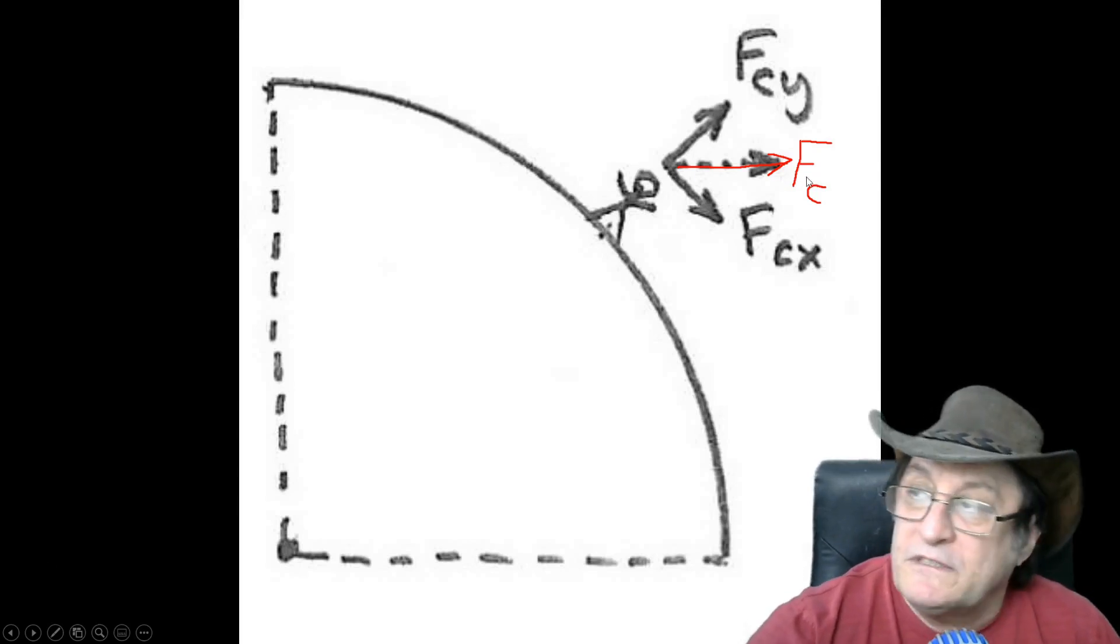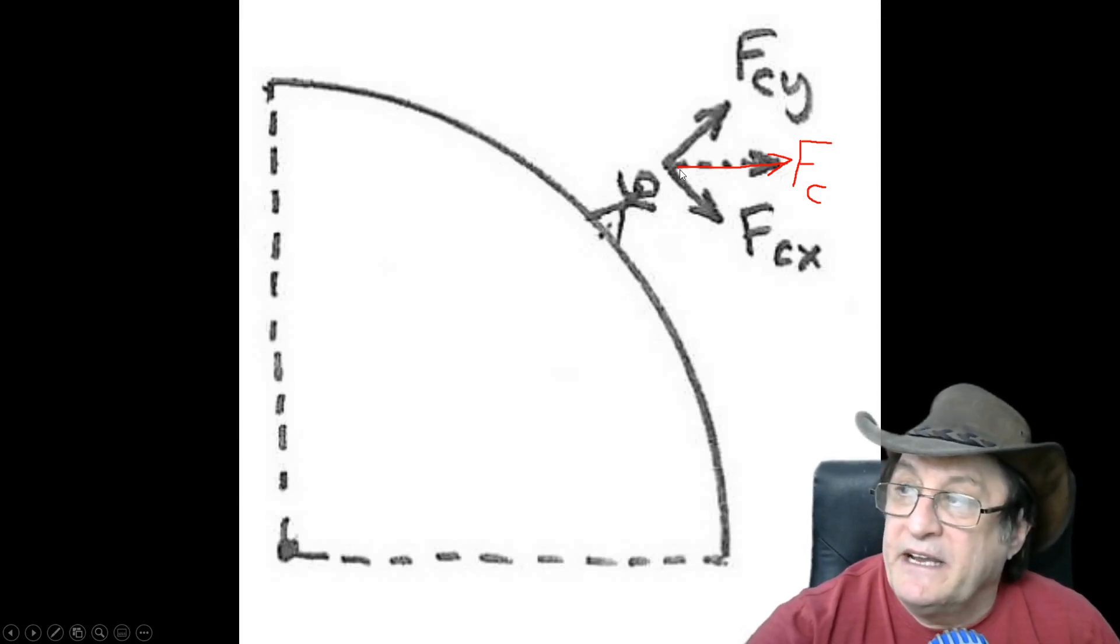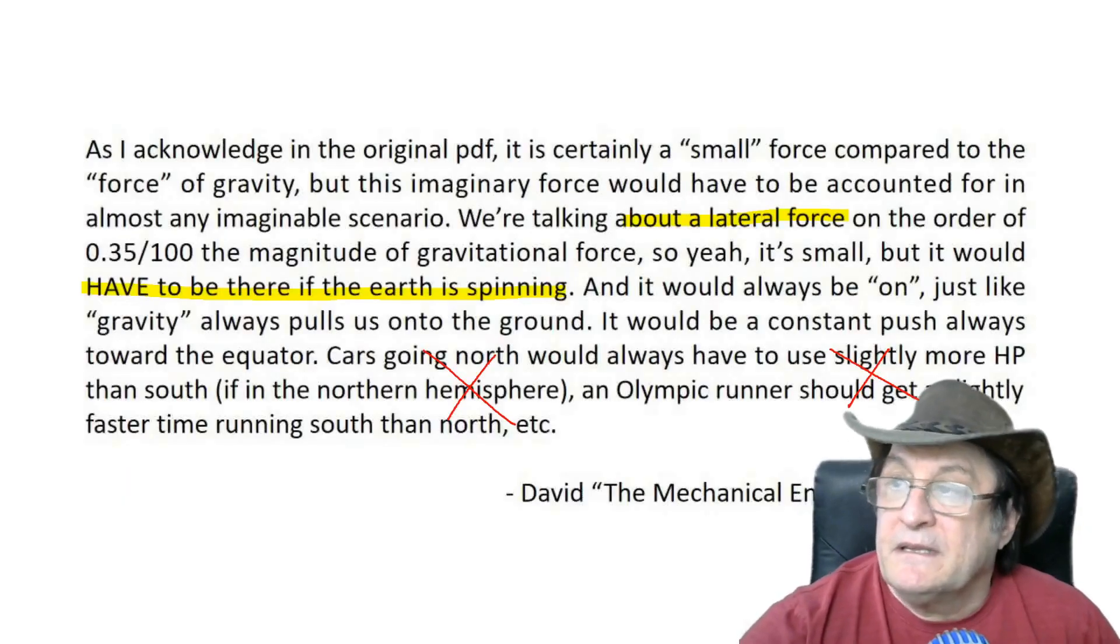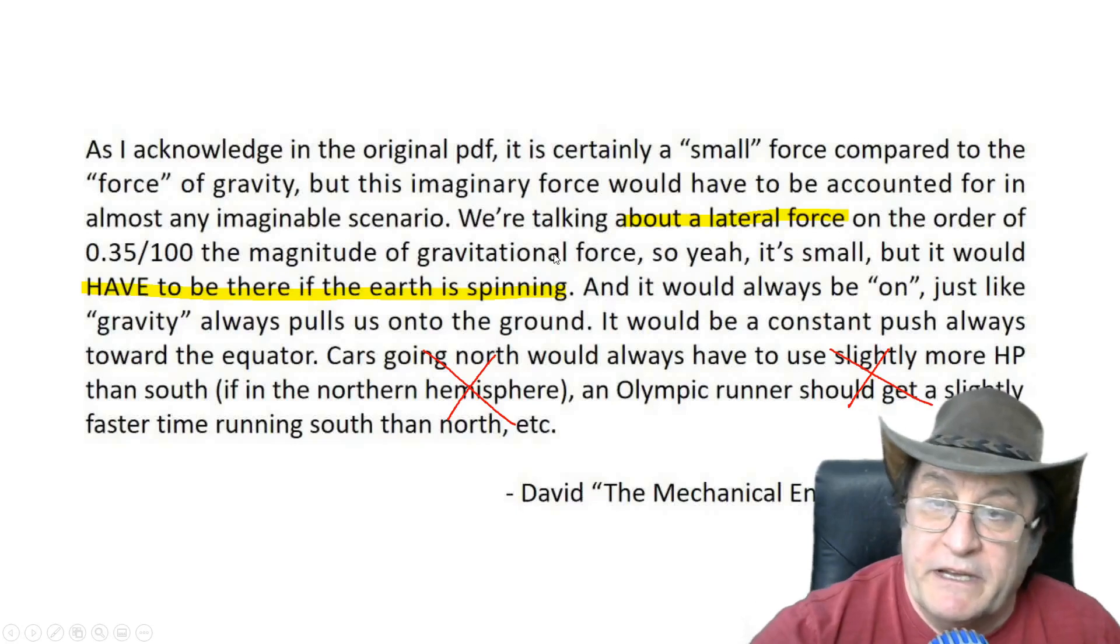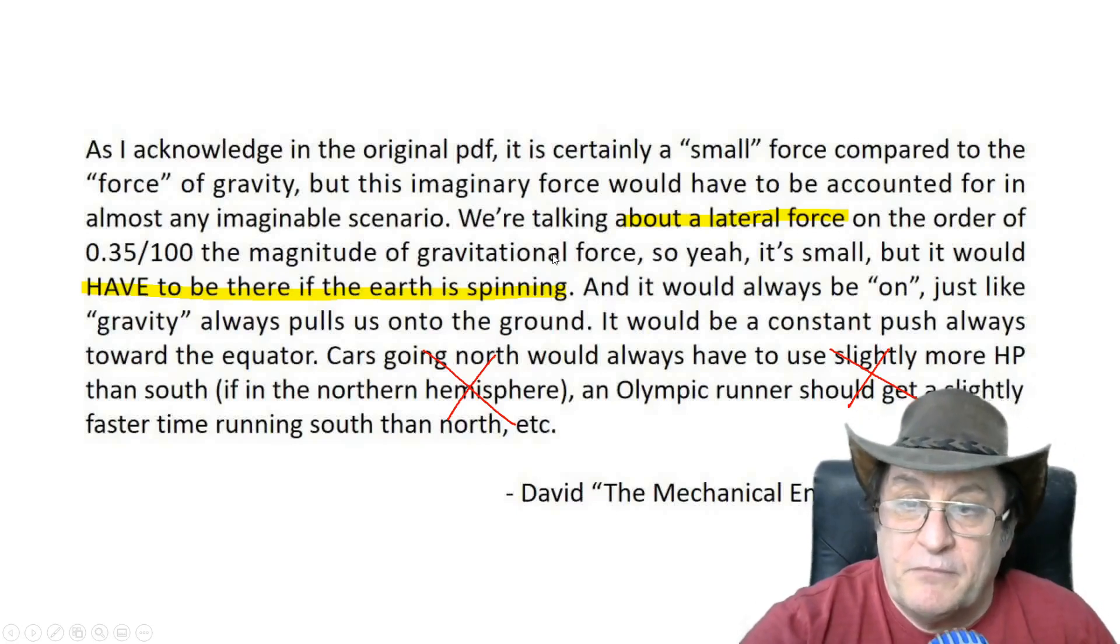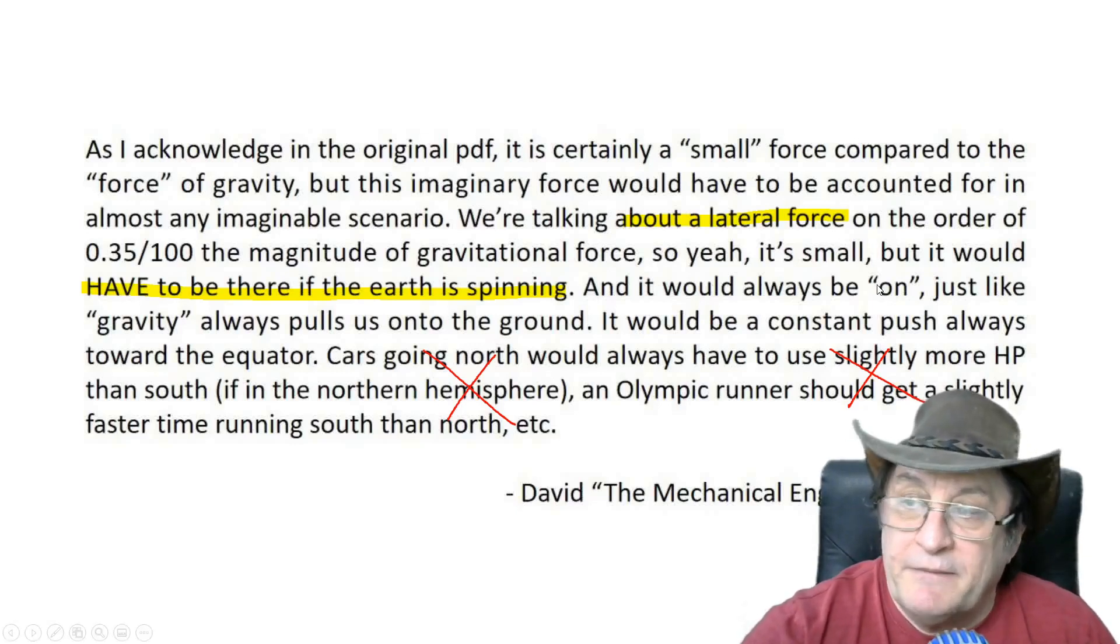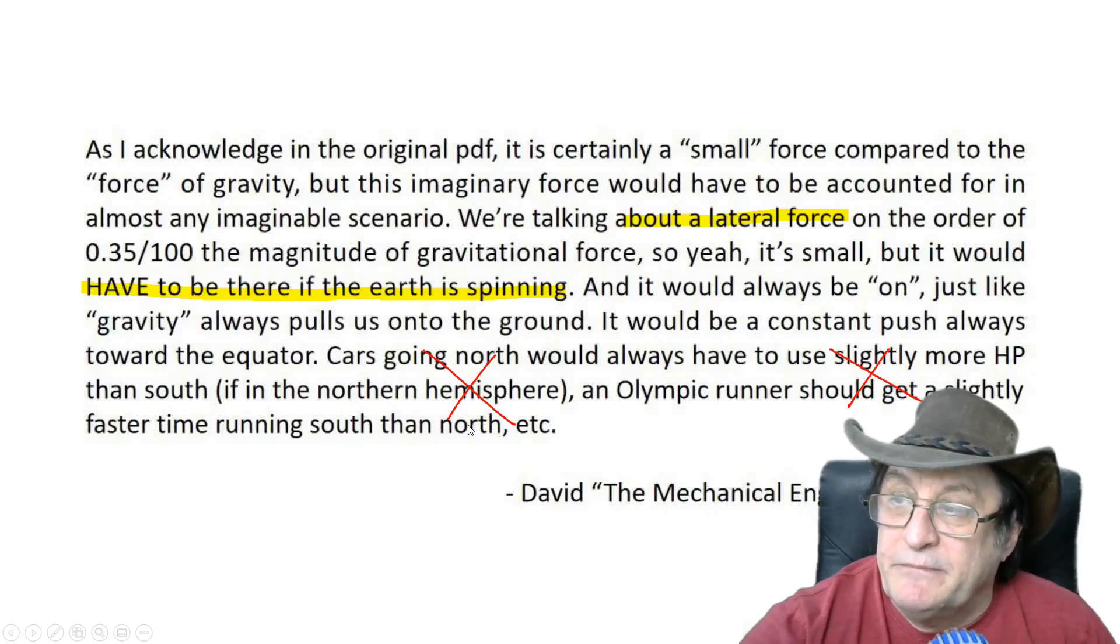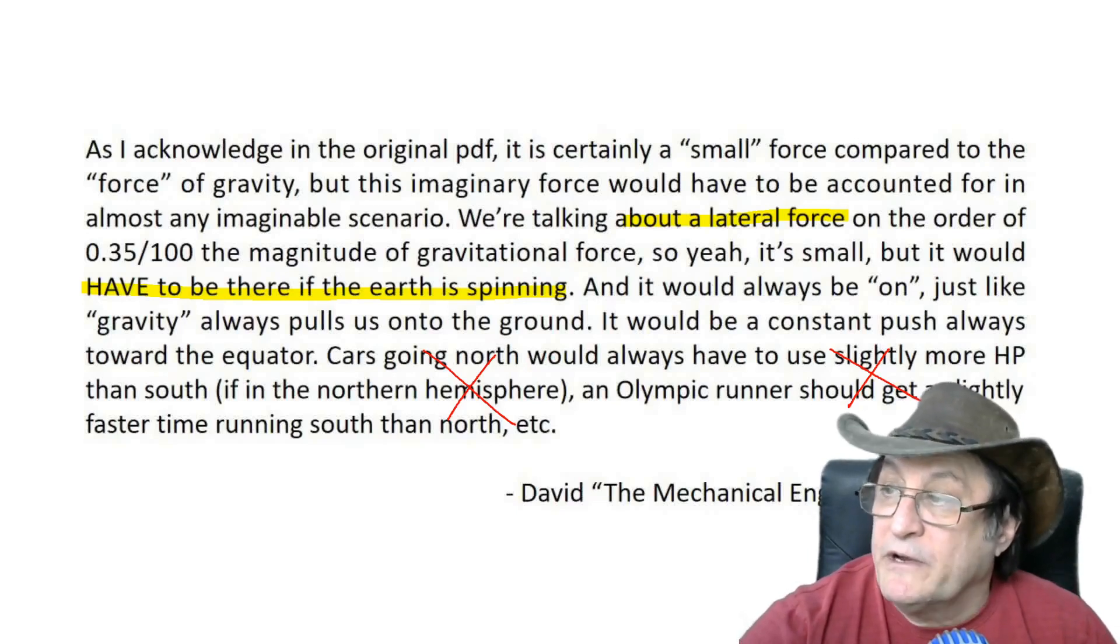So this is a great diagram. I'm glad that he brought this one to the table that I've written over there. Fc is the centrifugal force, and it is in a direction perpendicular to the axis of rotation, and it has a component Fcx and a component Fcy. Very good. He also again mentions here talking about a lateral force which is small. So there's none of this talk about being flung off the Earth by the rapidly spinning ball. So at least he's sensible about that. But this bit down the end, complete rubbish about cars going north, and an Olympic runner would get slightly faster time. Complete rubbish.